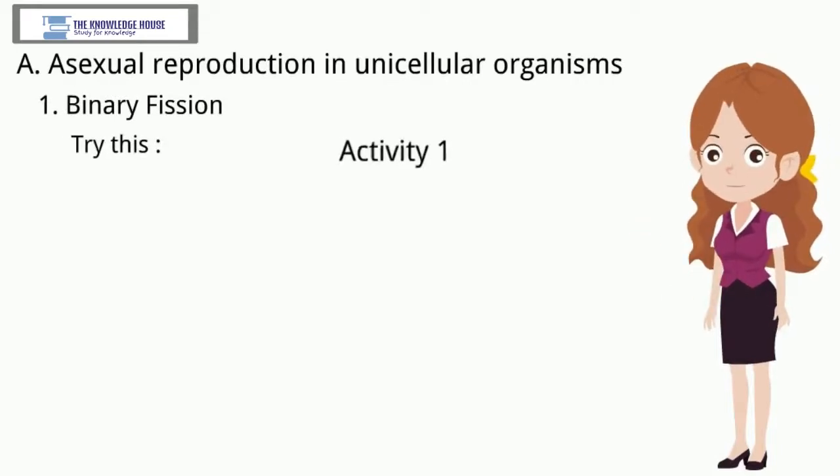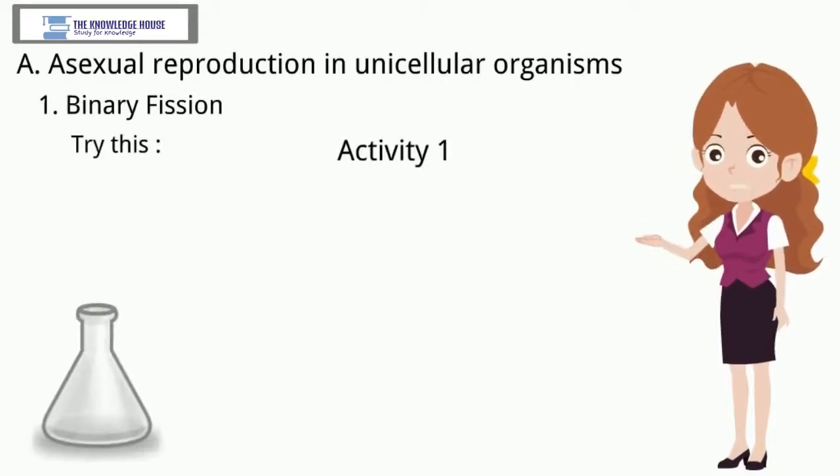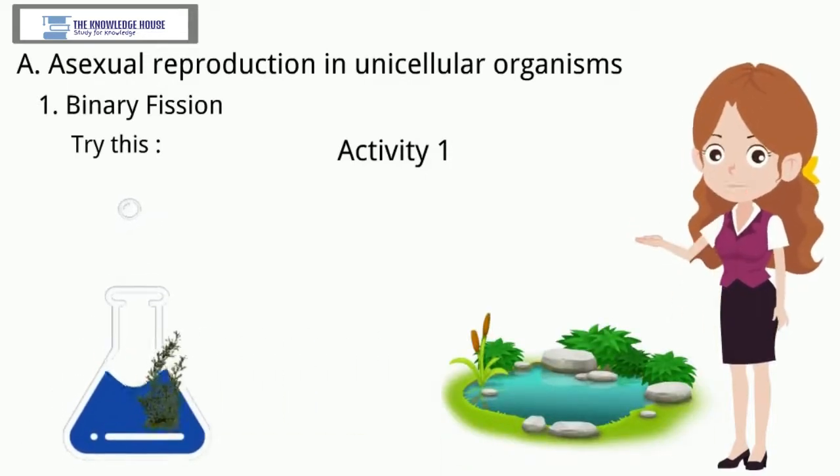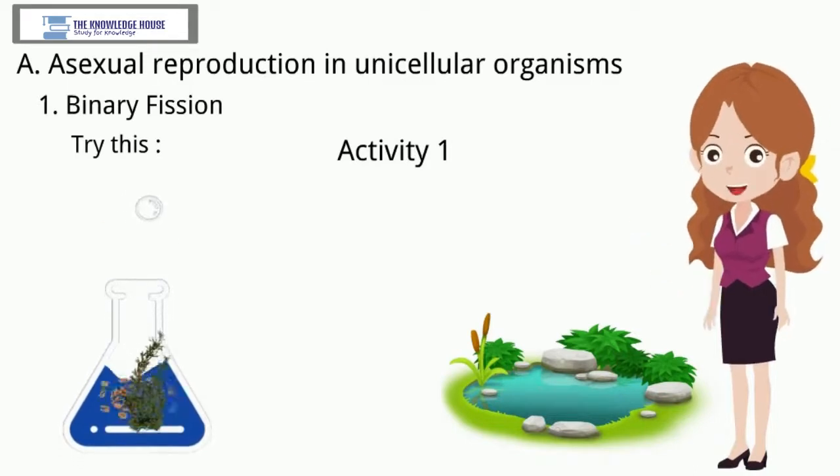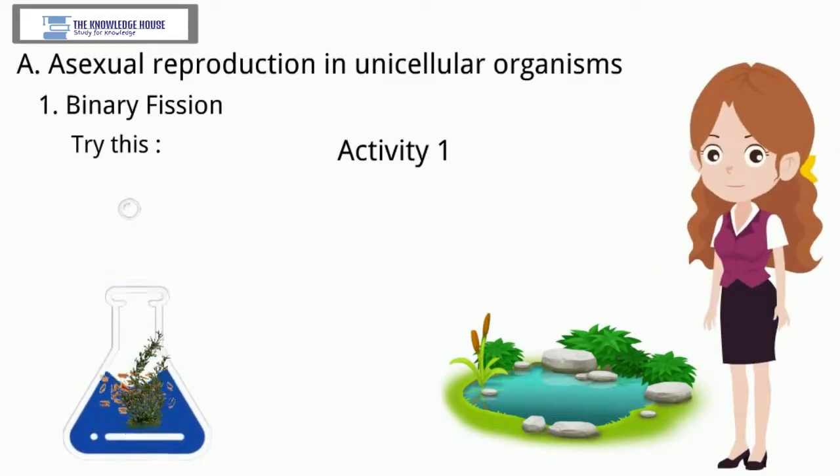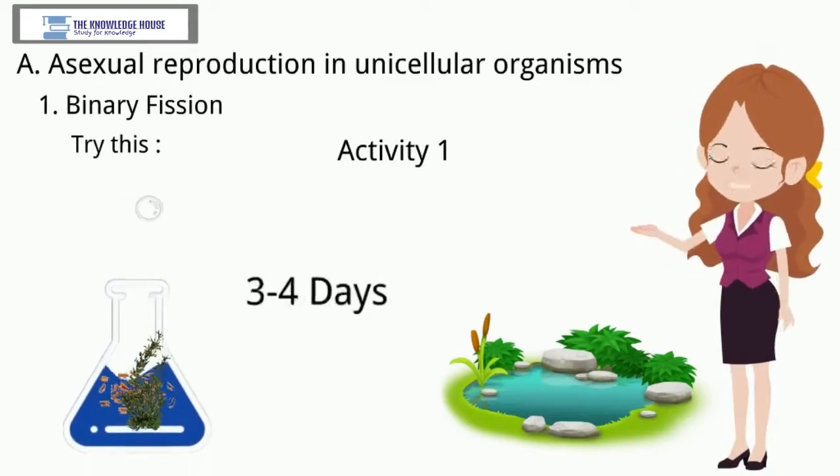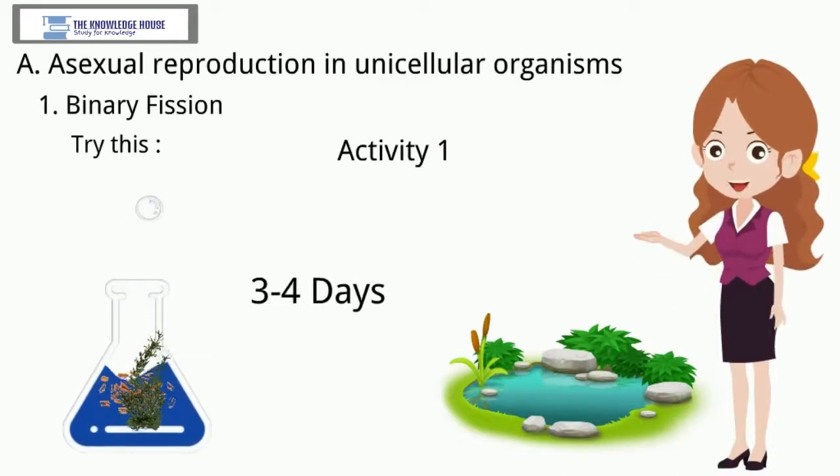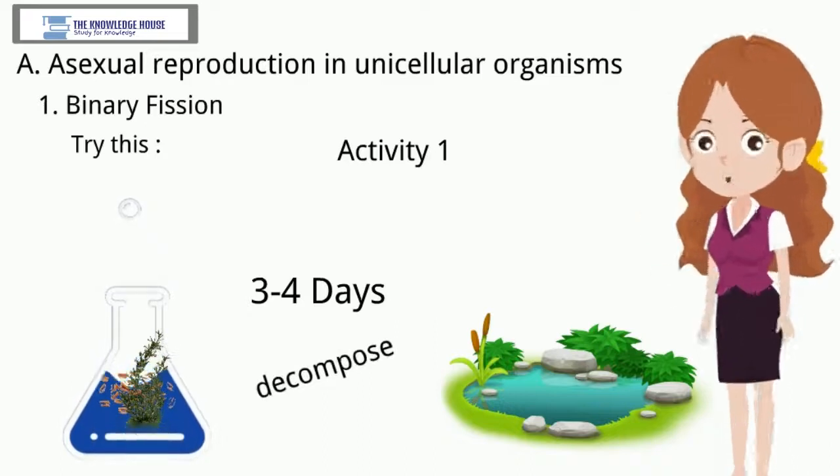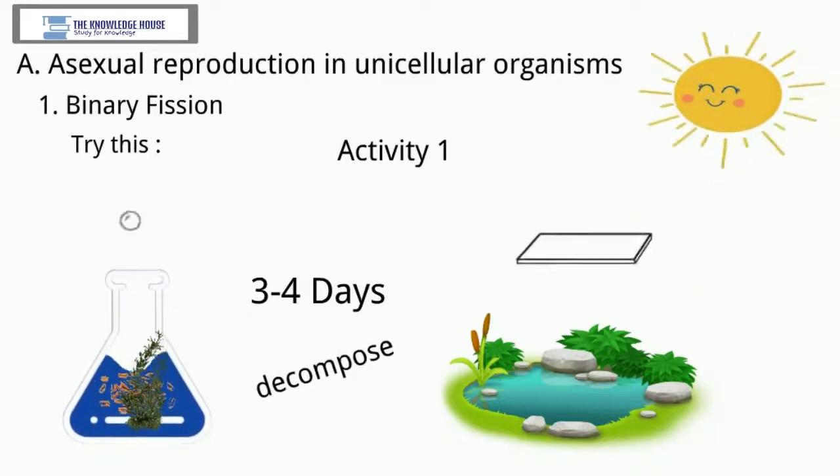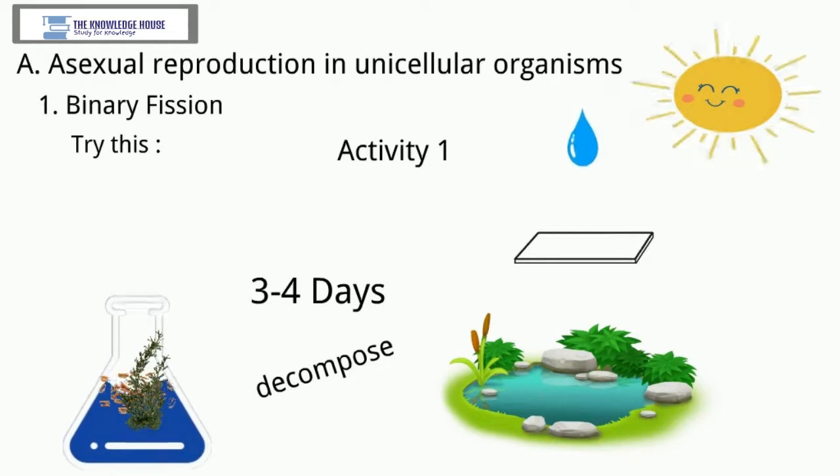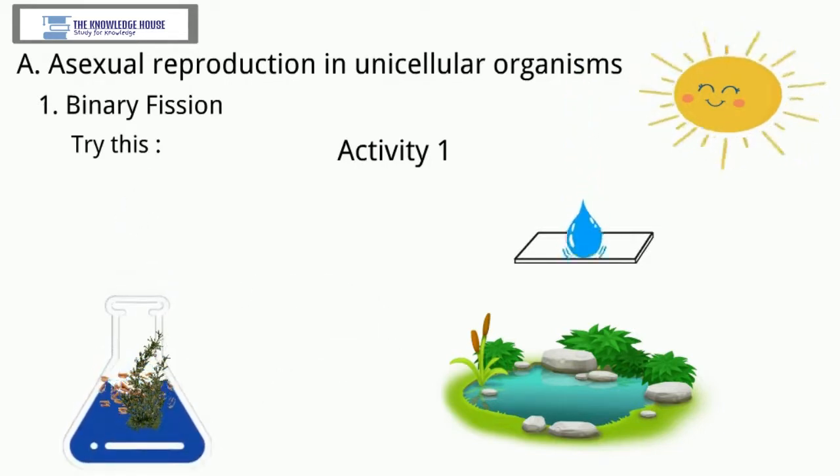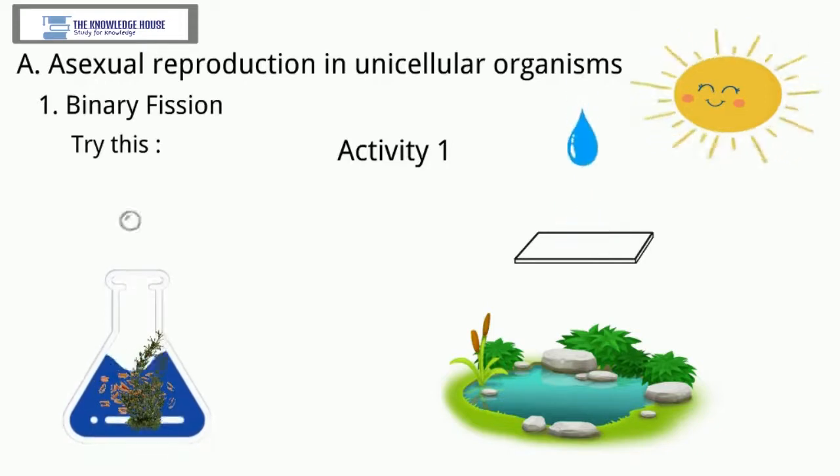Activity 1: Take a conical flask and collect the water in it from a pond having stagnant water and aquatic plants. Add some wheat grains and aquatic plants to it. Keep it for 3-4 days so that wheat grains and plants will decompose. Early in the morning on 4th day, take a glass slide and put a drop of that water over it. Carefully, put a cover slip on that drop and observe under compound microscope.